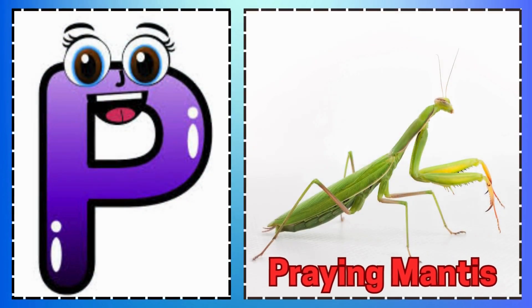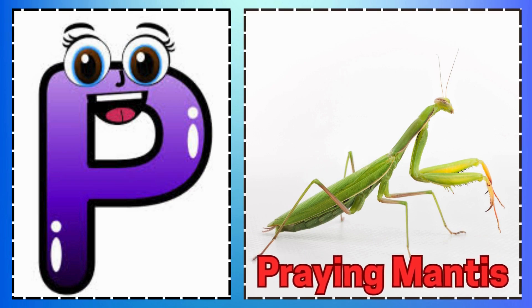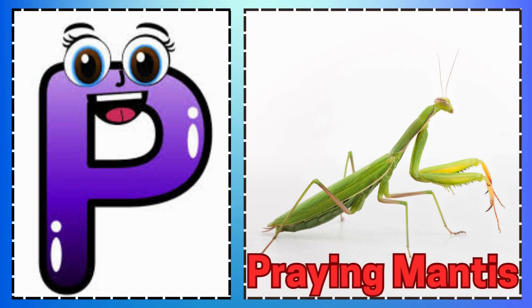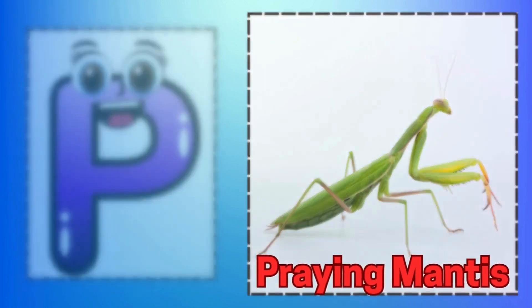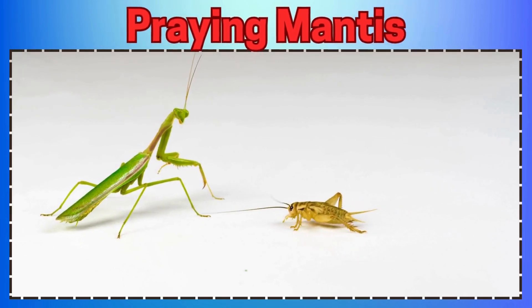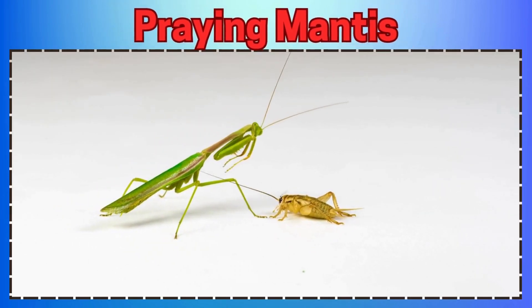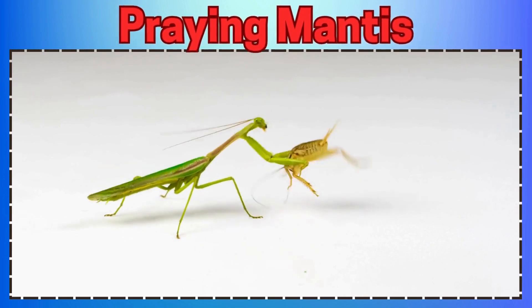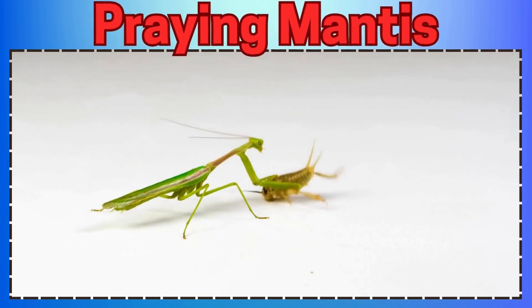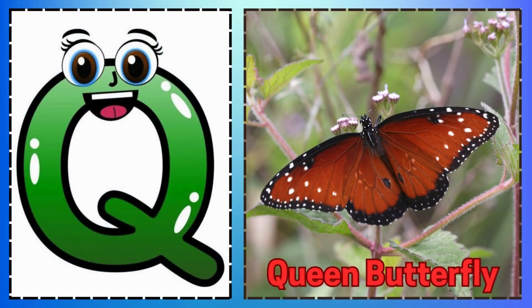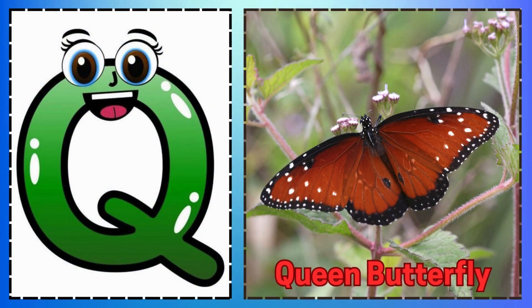P is for Praying Mantis. R is for Rice Weevil Hiding in Plants. S is for Stick Insect Looking like a Twig. T is for Termite Building Homes so Big. U is for Underwing Moth Hiding in Trees. V is for Velvet Ant Crawling. Q is for Queen Butterfly.